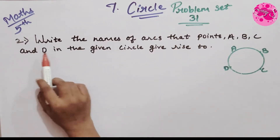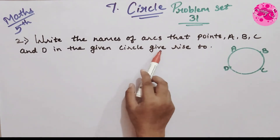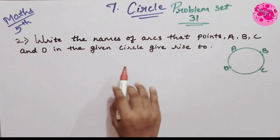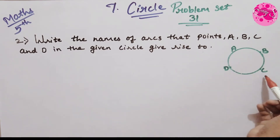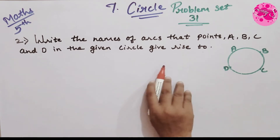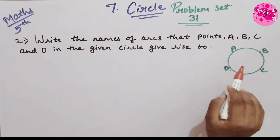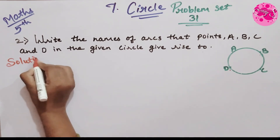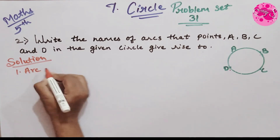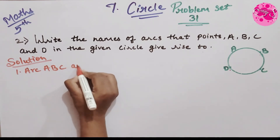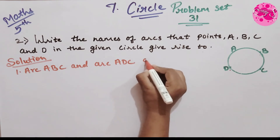Second question: Write the names of arcs that points A, B, C and D in the given circle give rise to. In this question we have to write the names of the arcs. The arcs with endpoints A and C are: arc ABC and arc ADC.